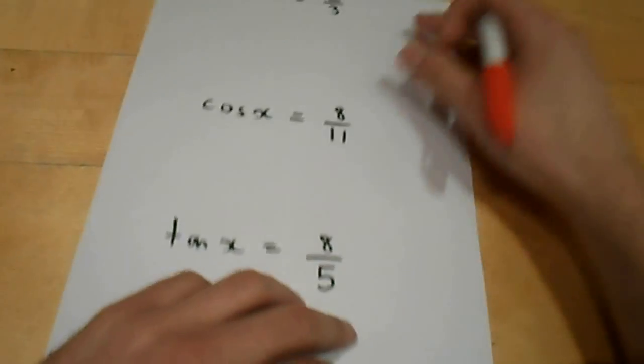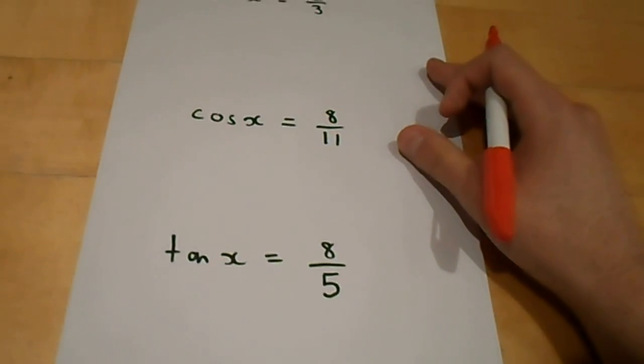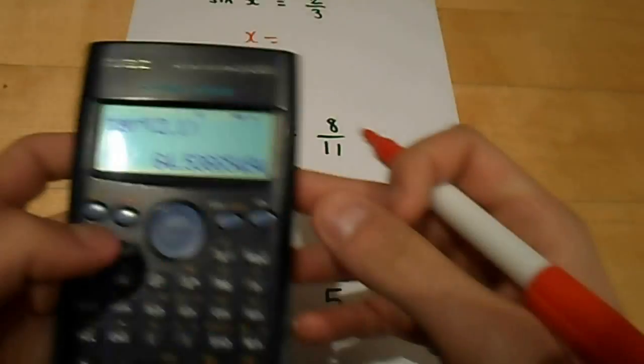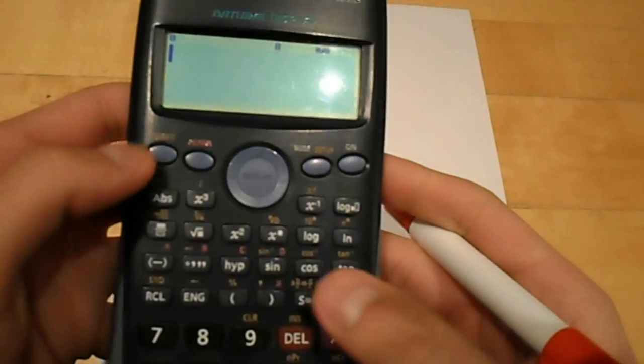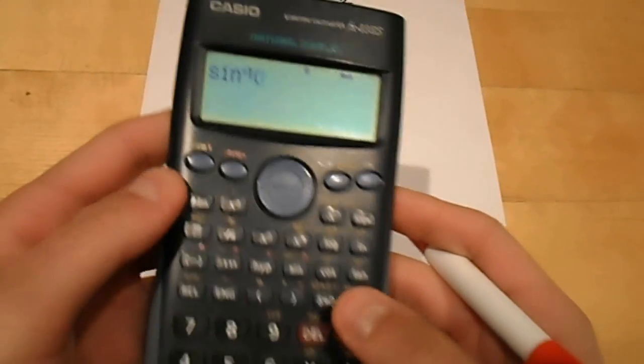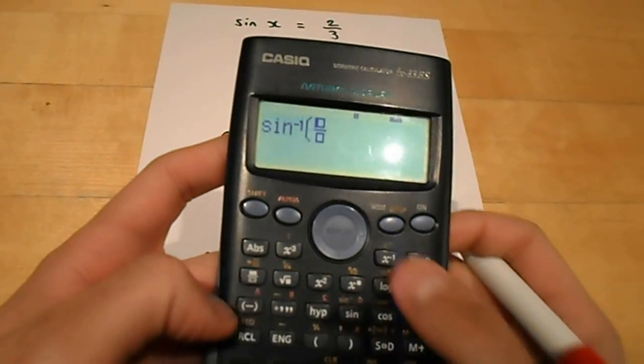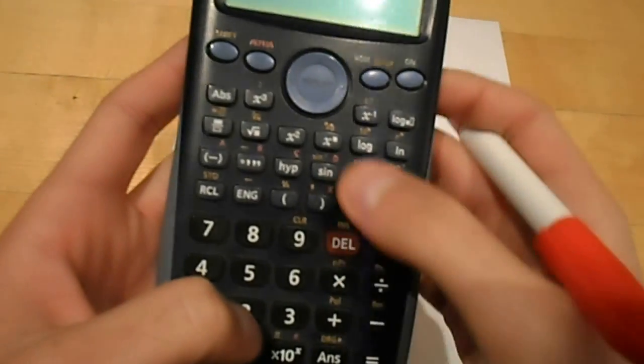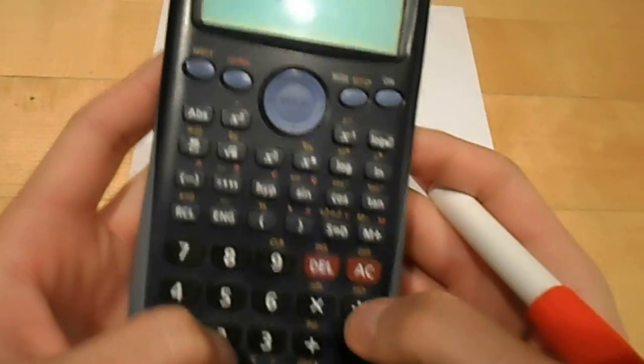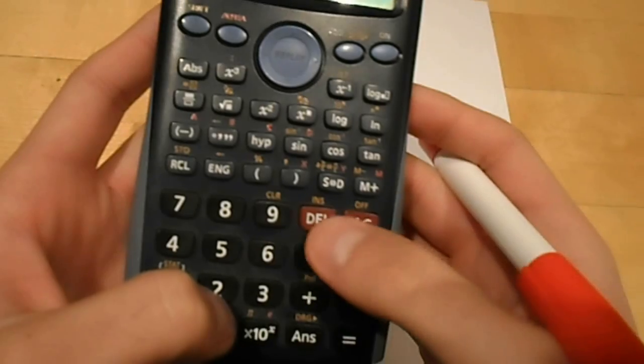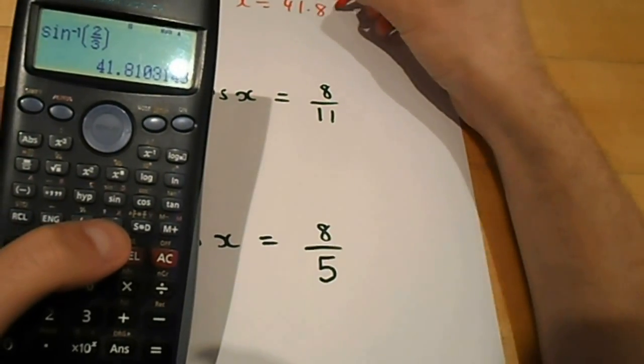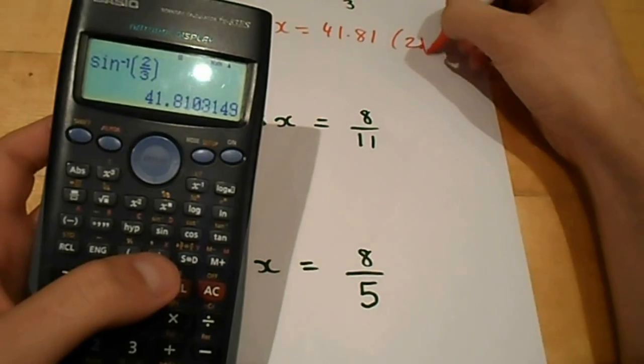Now, not only decimals, you can also use this with fractions using your calculator. So, this time, x would be inverse sine, so shift sine of two thirds. So, I just press the fraction button, and I can type in two thirds. Be very careful of where you put the end of your bracket, obviously. And then that equals 41.81 to two decimal places.